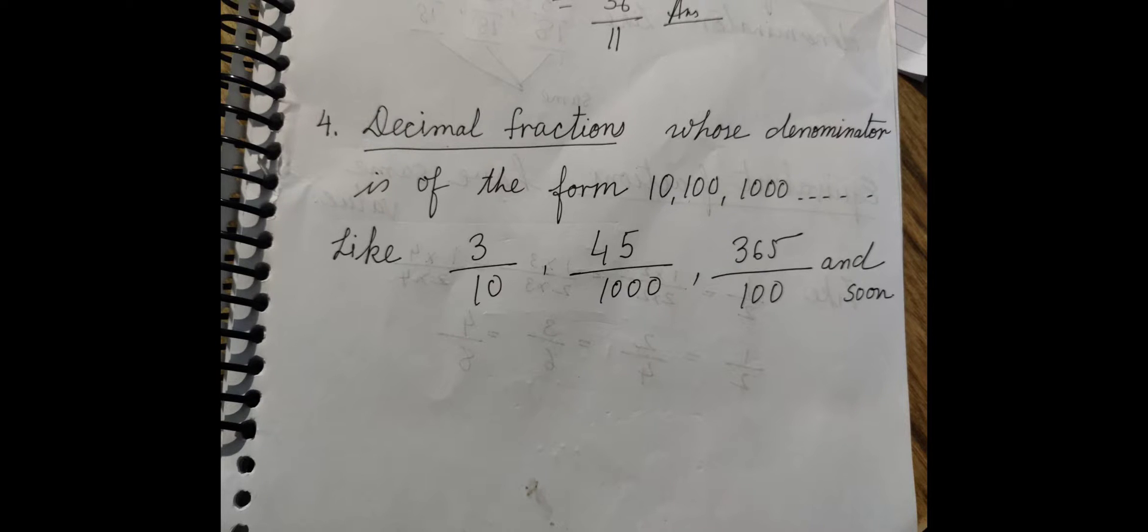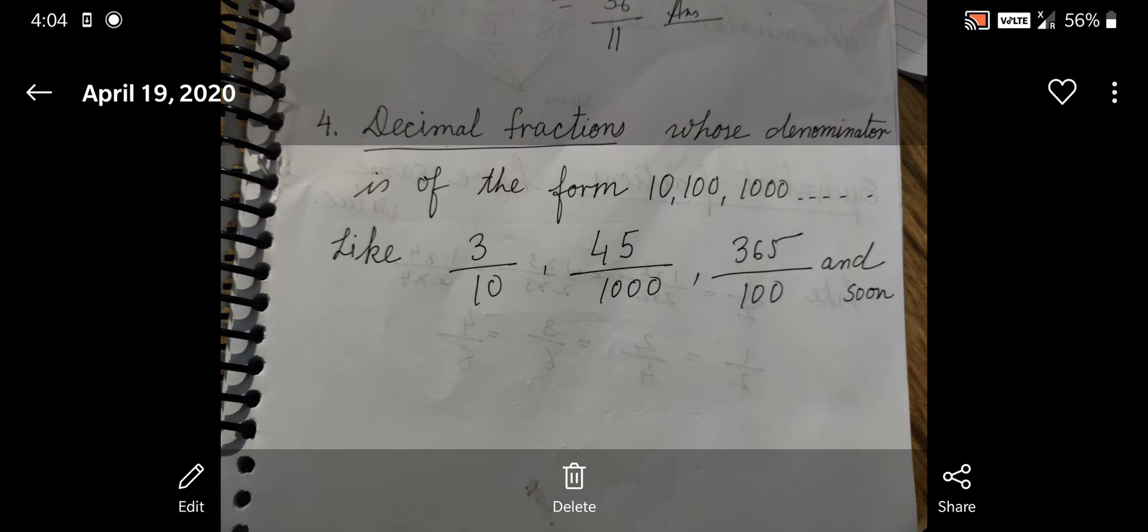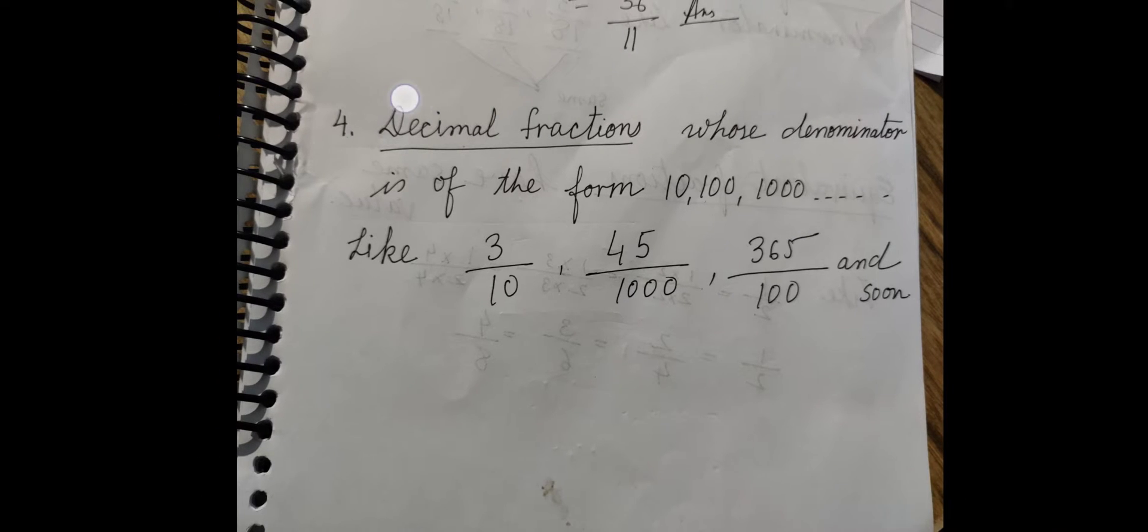decimal fraction. A fraction whose denominator is of the form ten, hundred, thousand, and so on - ten thousand, one lakh - it may be any number one along with many zeros. Like three upon ten, forty-five upon one thousand, three sixty-five upon one hundred and so on are all called decimal fractions.